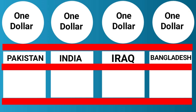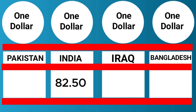Hello viewers, welcome back. 1 US dollar is equal to 302 Pakistani rupees. And 1 US dollar is equal to 82.50 Indian rupees.